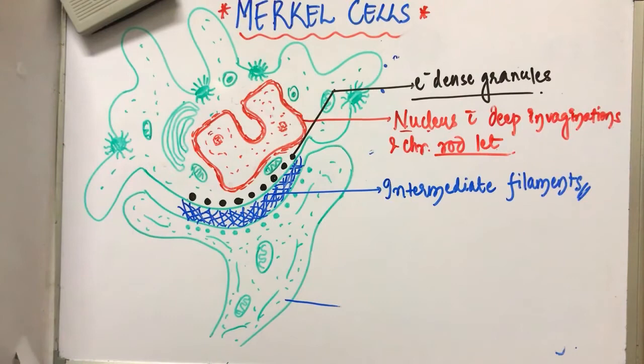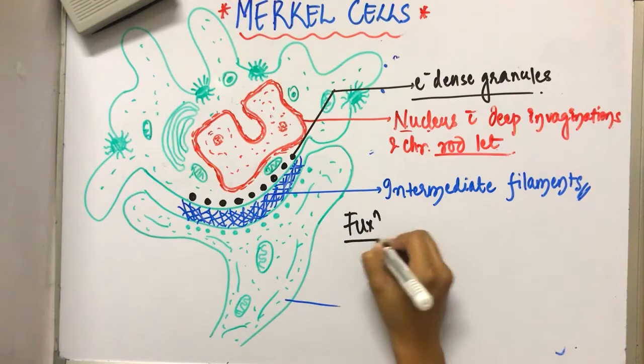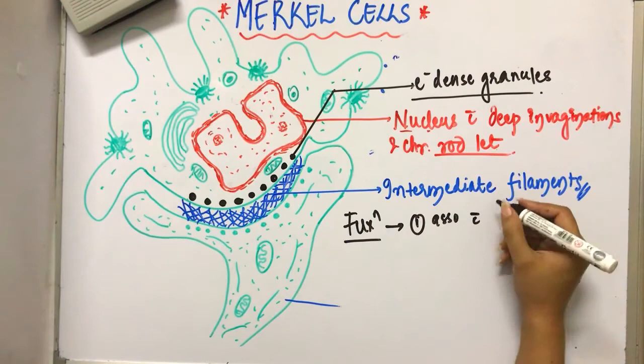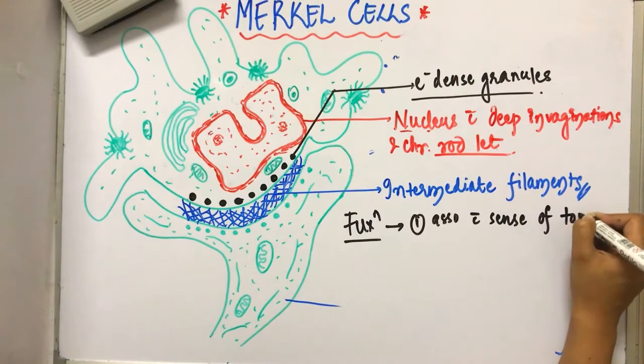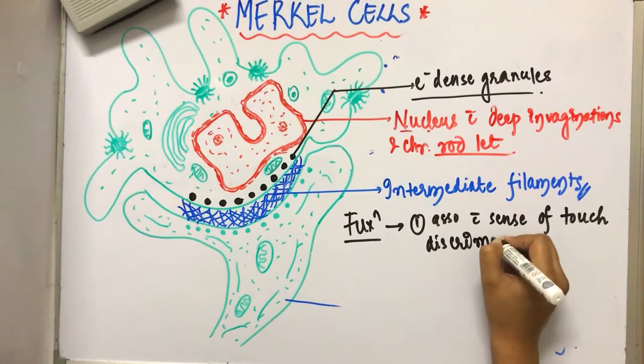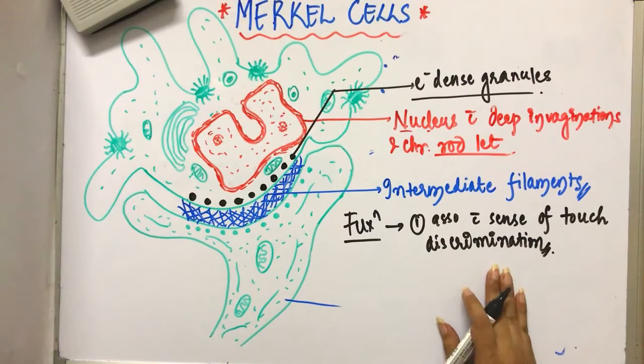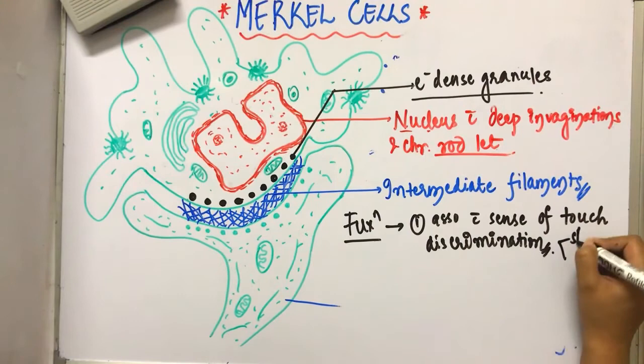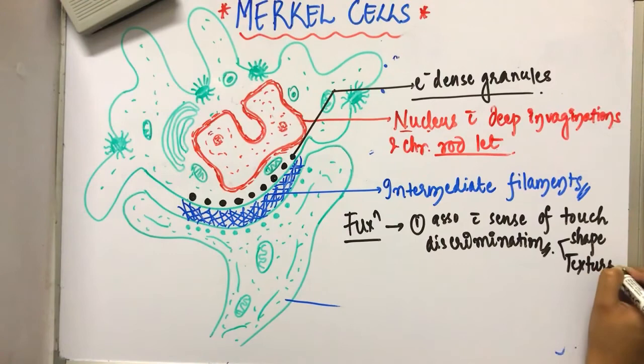Next is the function of these cells. It is associated with the sense of touch discrimination, like shape and texture. It is commonly seen in the masticatory mucosa.